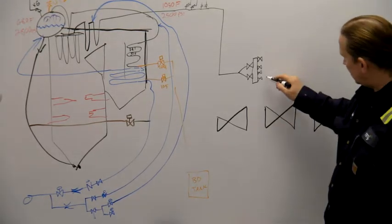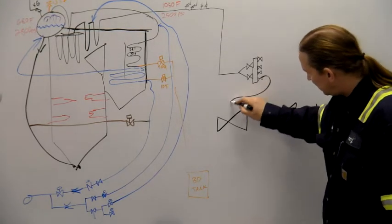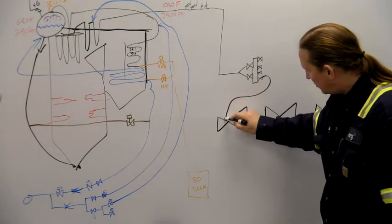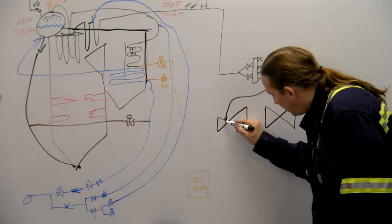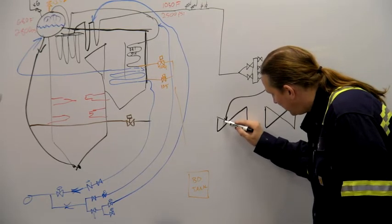Alright, so steam from the control valves goes into the turbine at the center. The HP turbine, high pressure turbine, has seven sets of blades.